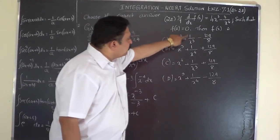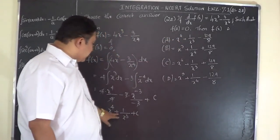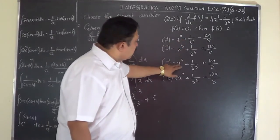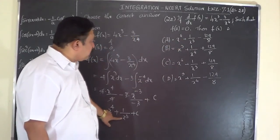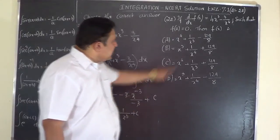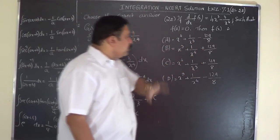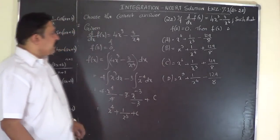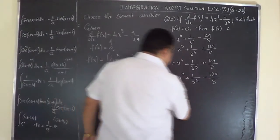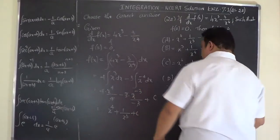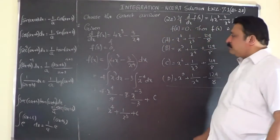So f(x) = x⁴ + 1/x³ + c. Two of the options match the form x⁴ + 1/x³, with c either −129/8 or +129/8. To determine the correct value of c, we use the condition f(2) = 0.